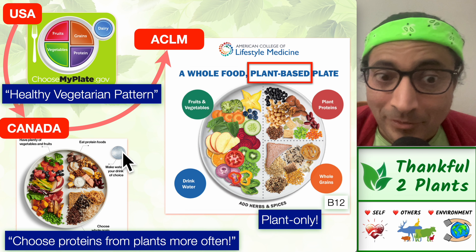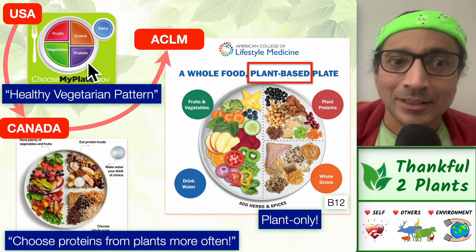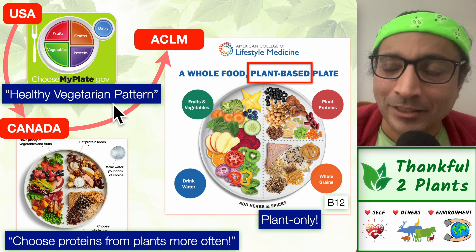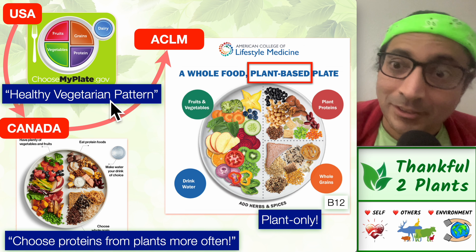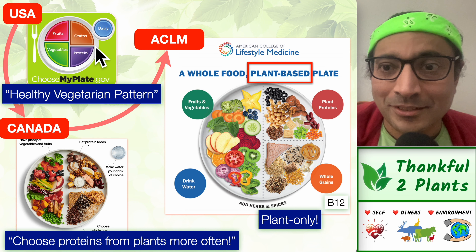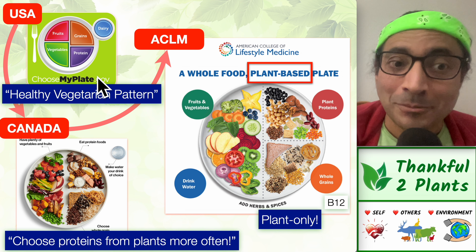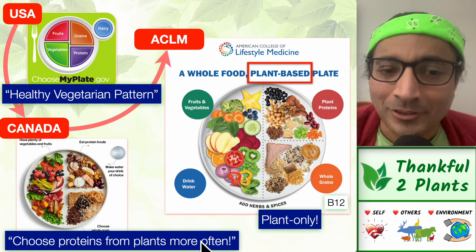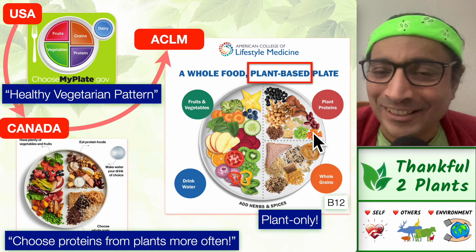The last quarter is protein. In the US system, there are three healthy eating patterns; one is a healthy vegetarian pattern with a provision for soy as dairy and plant-only protein. The Canadian food guide says choose proteins from plants more often. ACLM says just eat plants — it's a plant-only food plate.